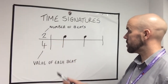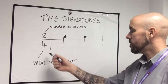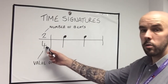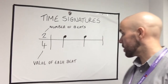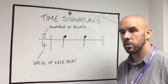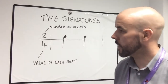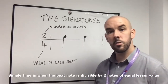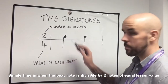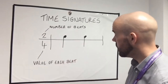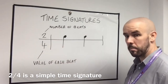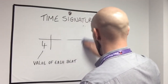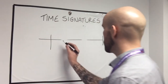So the top number told us the number of beats — two of them. The bottom number told us the value of each beat, being a quarter note — a crotchet. The third thing it tells us is whether the time signature is in simple or compound time. Simple time is when the beat note is divisible by two notes of equal or lesser value. A crotchet can be split in half to get two quavers, so that tells us it is a simple time signature.